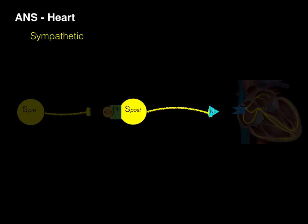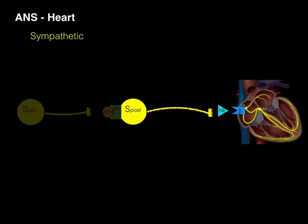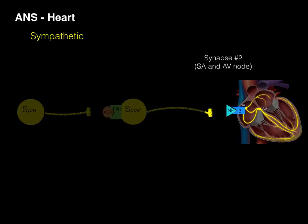Once this occurs, our post-ganglionic sympathetic neuron is then going to conduct an impulse down its axon and synapse, sending norepinephrine or epinephrine into that second synapse, to bind with an adrenergic receptor — in this case, specifically a beta-adrenergic receptor. And that's what happens at synapse number two.